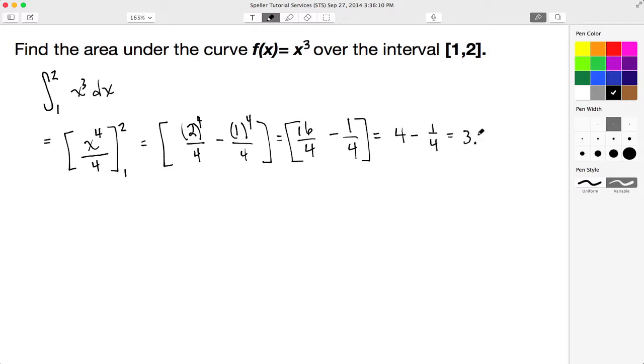3.75, because I know that 1/4 is 0.25, and if I subtract that off I end up with 3.75. That there is the area underneath the curve, in square units. Let's pull up the calculator and verify this result.